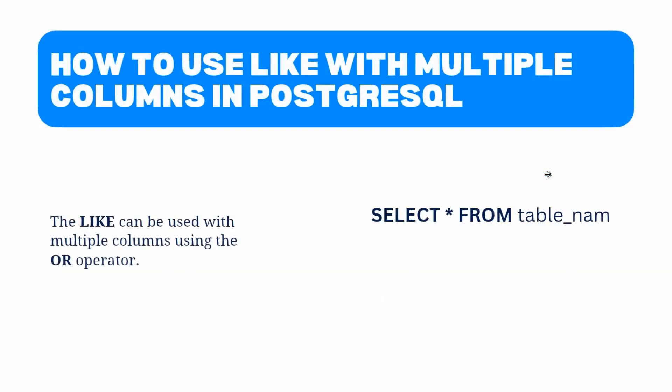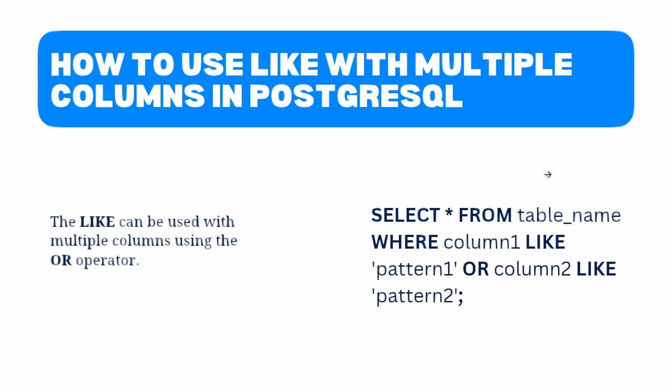Move to the next topic: how to use a LIKE operator with multiple columns in PostgreSQL. Sometimes we may want to search for a specific pattern in multiple columns of a table. In such cases, we can use the LIKE operator with multiple conditions combined with the OR operator to search for the pattern in each column.